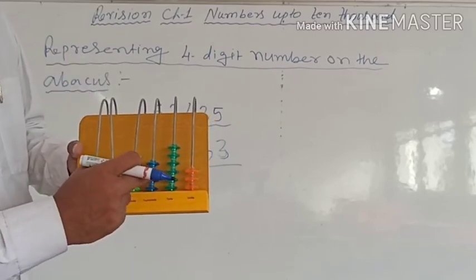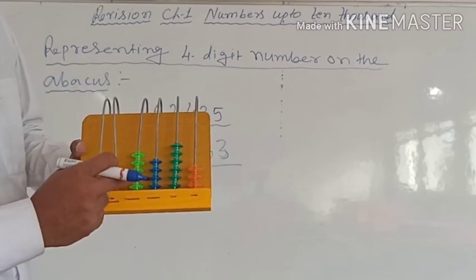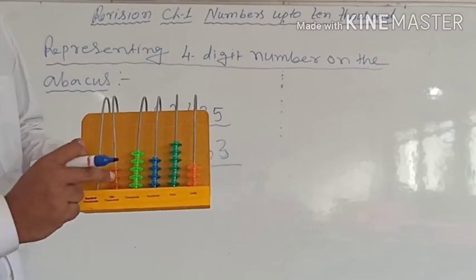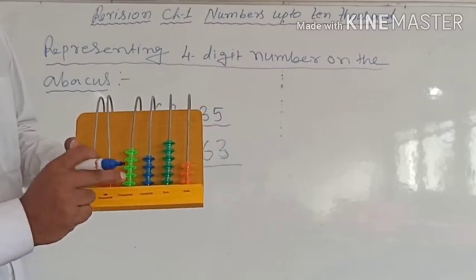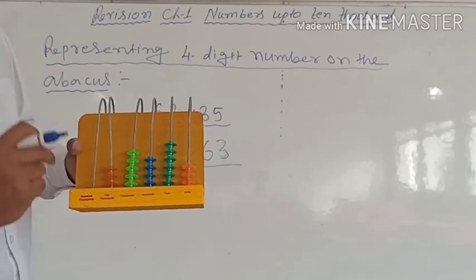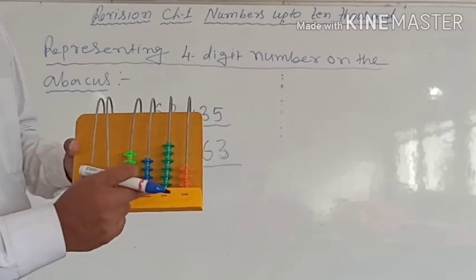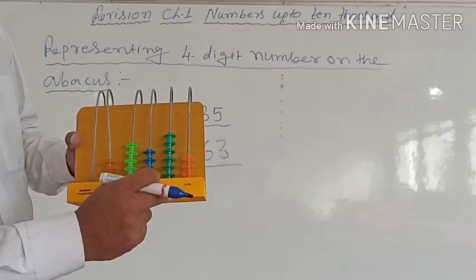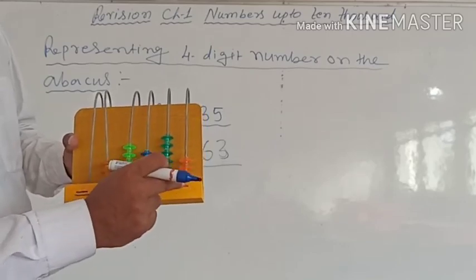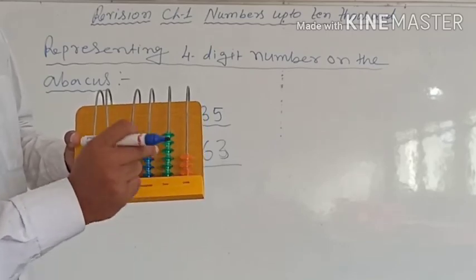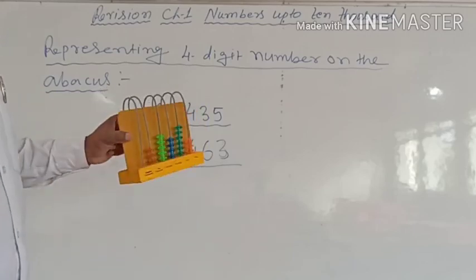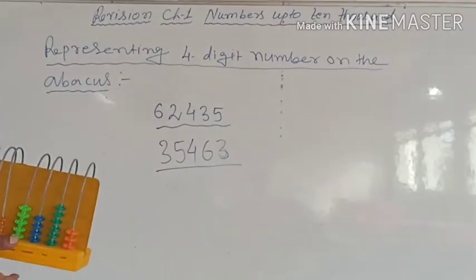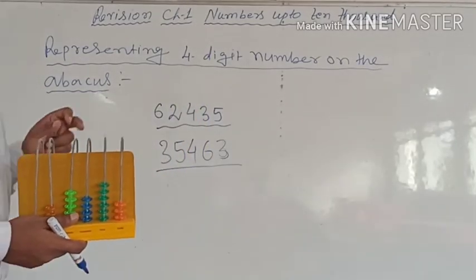Because: tens-thousands and thousands give 35, so 35,000. Hundreds place has 4, so 400. Tens place has 6, so sixty. And ones place has 3. So sixty-three. Therefore the number is thirty-five thousand four hundred sixty-three. This is how we can represent any number using the abacus.